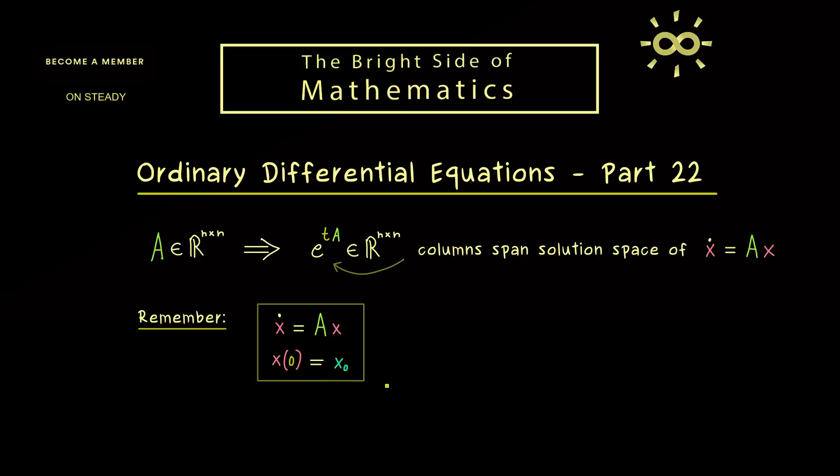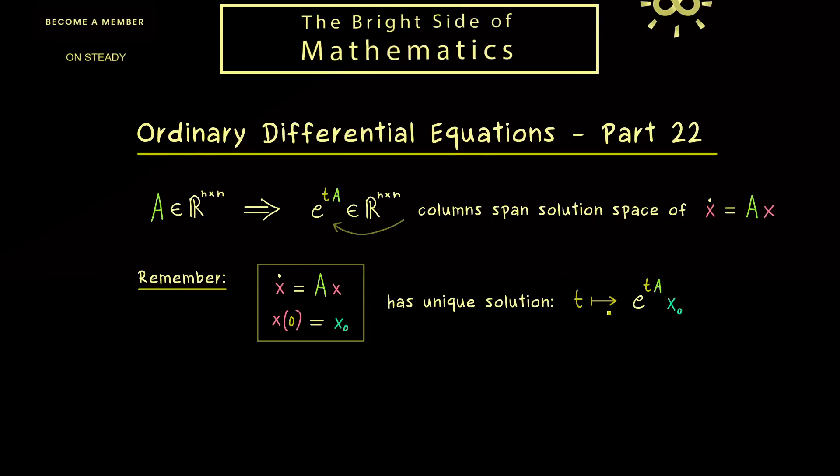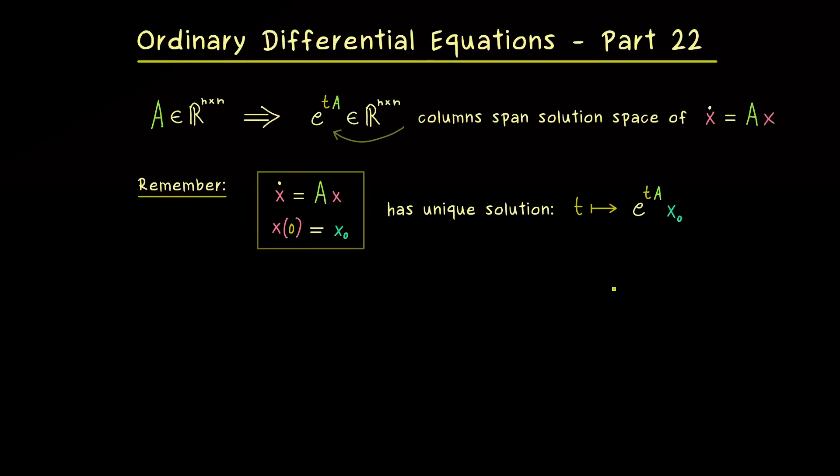And in this sense, we also easily find the unique solution of an initial value problem. Usually we give the initial value as a vector x0 in R^n, and then in order to get the unique solution, we just have to multiply this vector with our matrix from the right-hand side. So this is an important property we already have, and therefore we want to discuss more about the matrix exponential and how we can calculate with it.